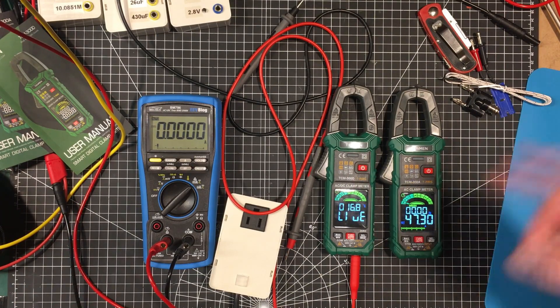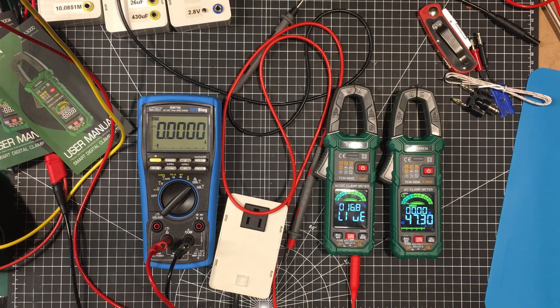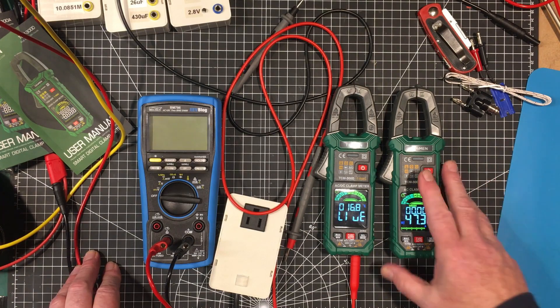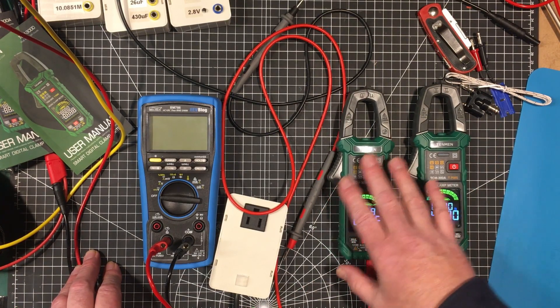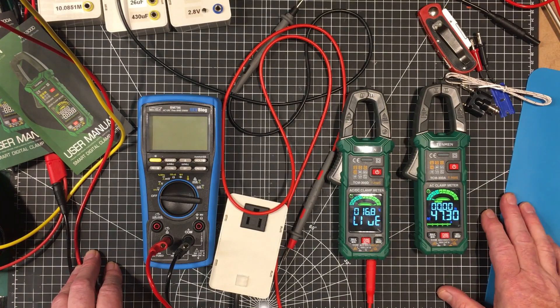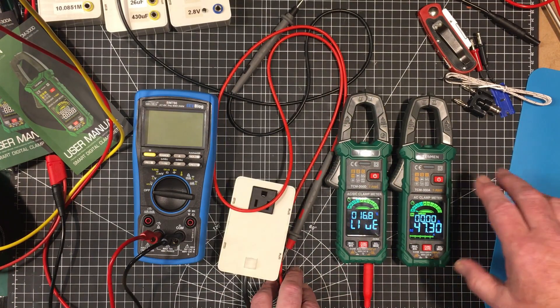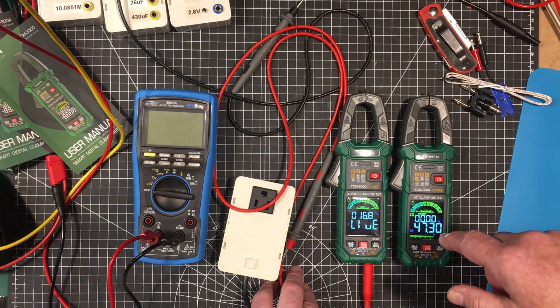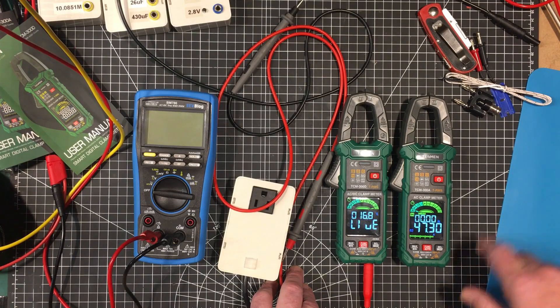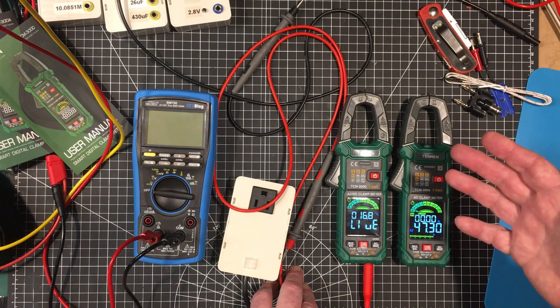Anyway, I will leave links to them down below if you wanted to pick them up. They're available on Amazon. For me, out of the two of them, this would be the one I'd go for. Because of the DC capability. Alright, thanks guys. I hope you got something out of this. Give me a thumbs up. Subscribe if you haven't yet. I'd really appreciate that. And I'll catch you guys in the next video.